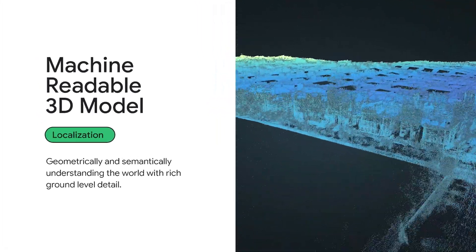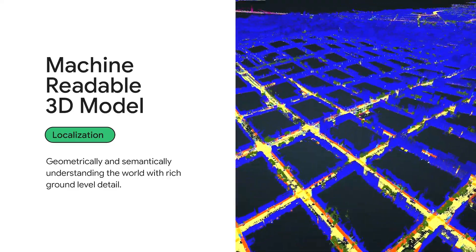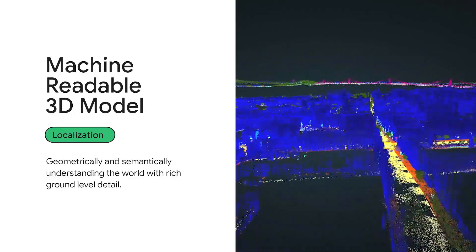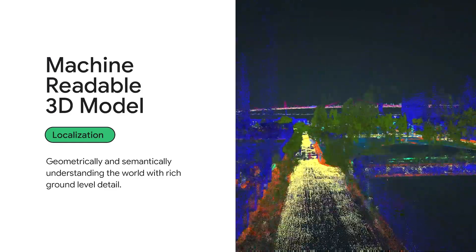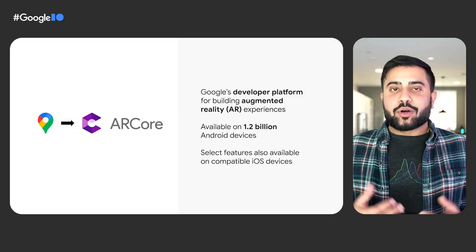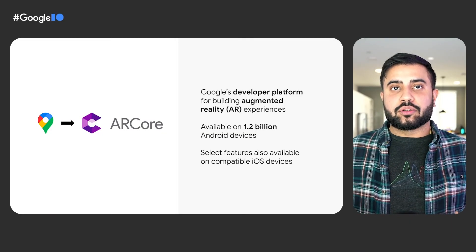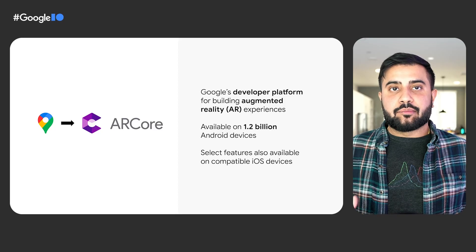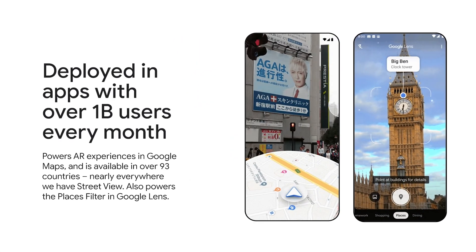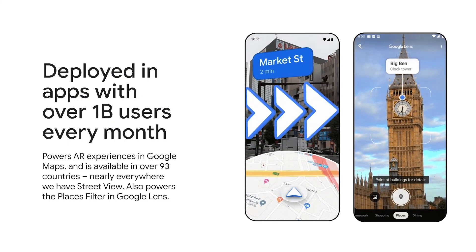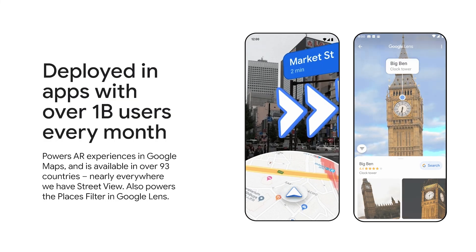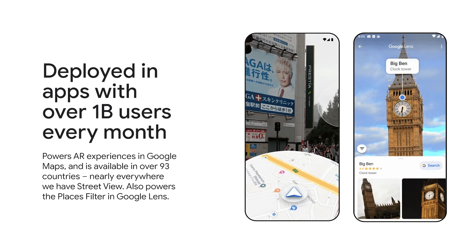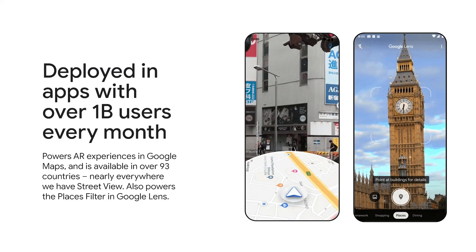Today, we are here to talk to you about the machine-readable 3D model, and in particular, the smartphone camera in your pocket, and how we're enriching it with Google's understanding of the world to allow you, the developer community, to create immersive, world-scale AR experiences. We're excited to partner with the Google AR teams to bring this 3D understanding of the world to you through ARCore, Google's AR developer platform, which allows Android and iOS developers to build immersive AR experiences for mobile. This technology is called global localization, and has been stress-tested in production, powering the AR Live View mode inside of Google Maps and the AR Places filter in Google Lens. And today, we're excited to open up the same core capability to you, our developer community, to create immersive location-based AR experiences in your own applications.